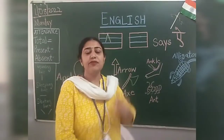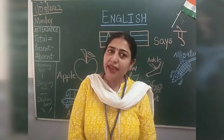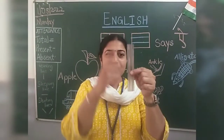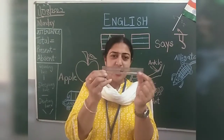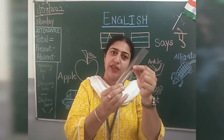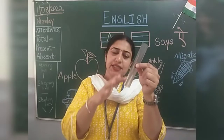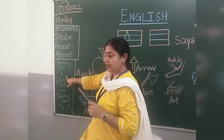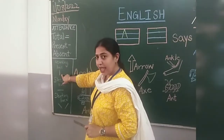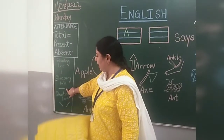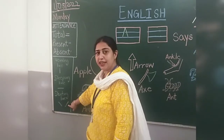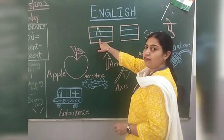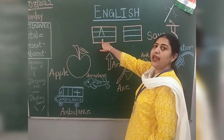Earlier we have done lines — standing line, sleeping line, and slanting line. See this blackboard? We have done standing line, sleeping line, and slanting line. By using slanting line and sleeping line, we will make Alphabet A.